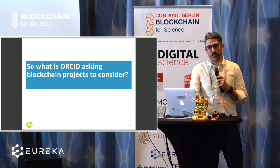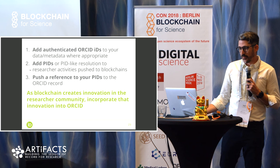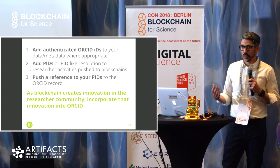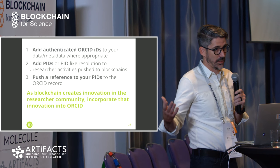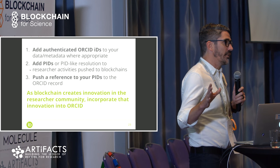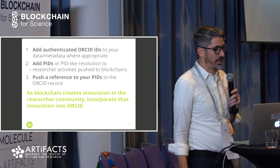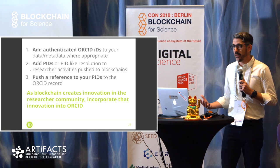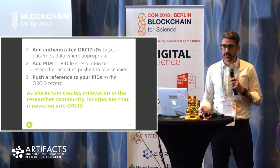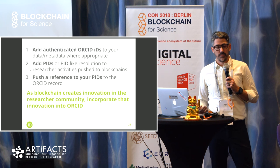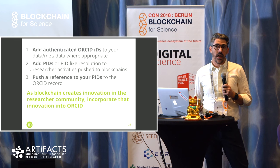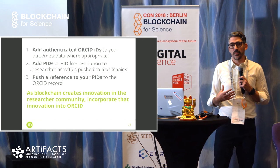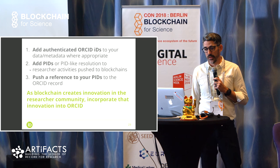Let's get down to the brass tacks — what are we really asking? Number one: if you're trying to attribute activities to researchers or attribute a researcher itself, use the ORCID ID. That may or may not link directly to the ORCID record — you could use an ORCID ID in an internal or external system. The important thing is there is this idea where we're trying to make it easy to disambiguate who a researcher is. Add PID or PID-like resolution to researcher activities pushed to blockchain. A lot of blockchain technology is very hard for people to understand — the tooling is hard. But for metadata, both for machines and humans, PID-like infrastructure — links that are persistent and you can click and see what the link is describing — is pretty easy for people to use.